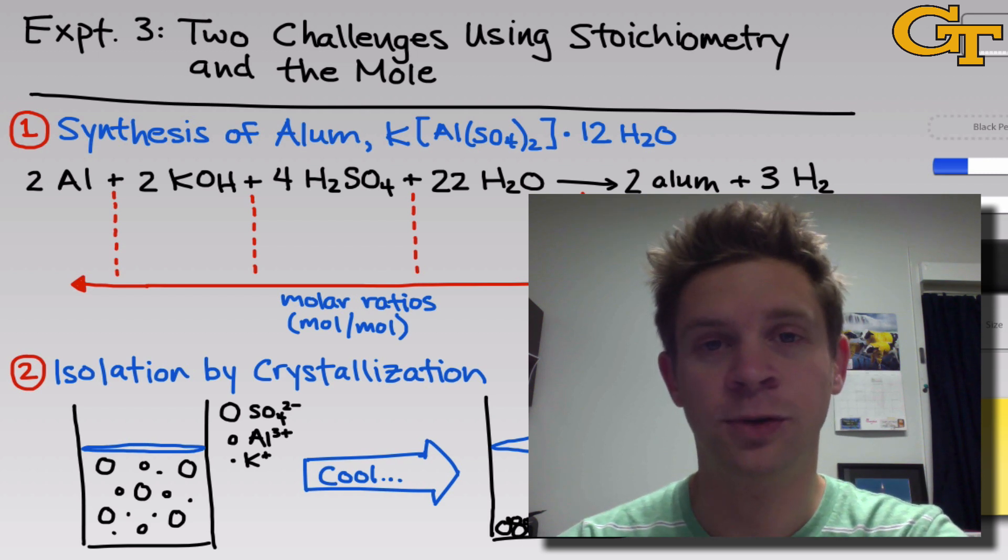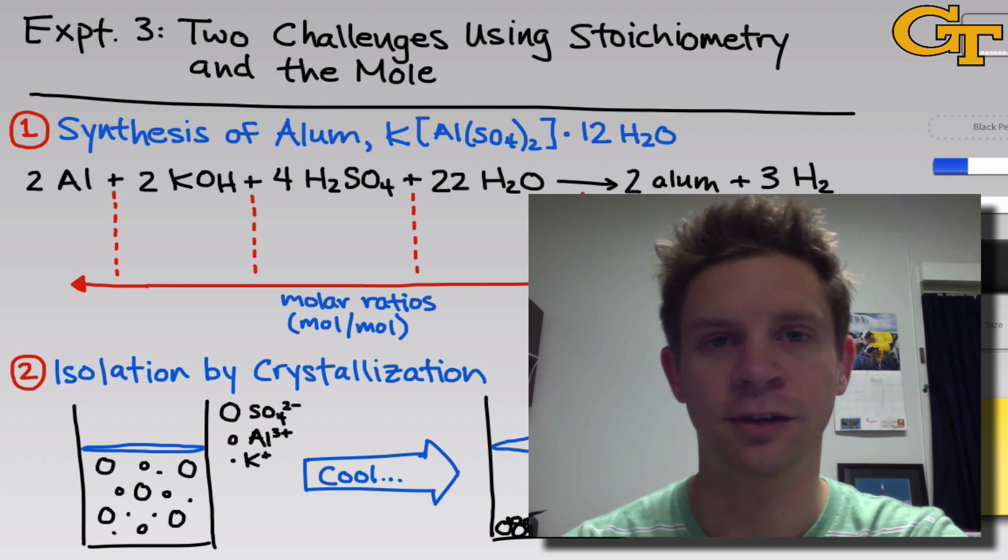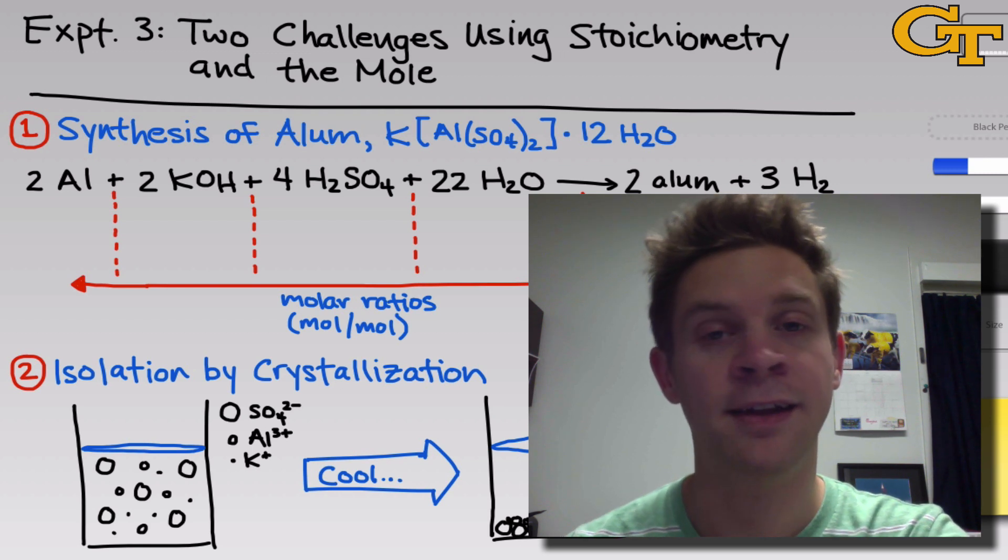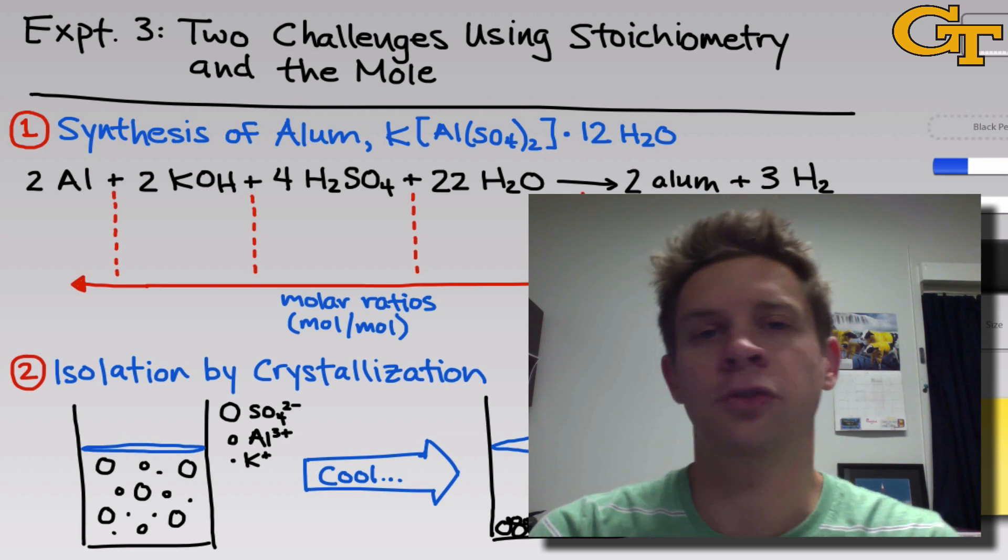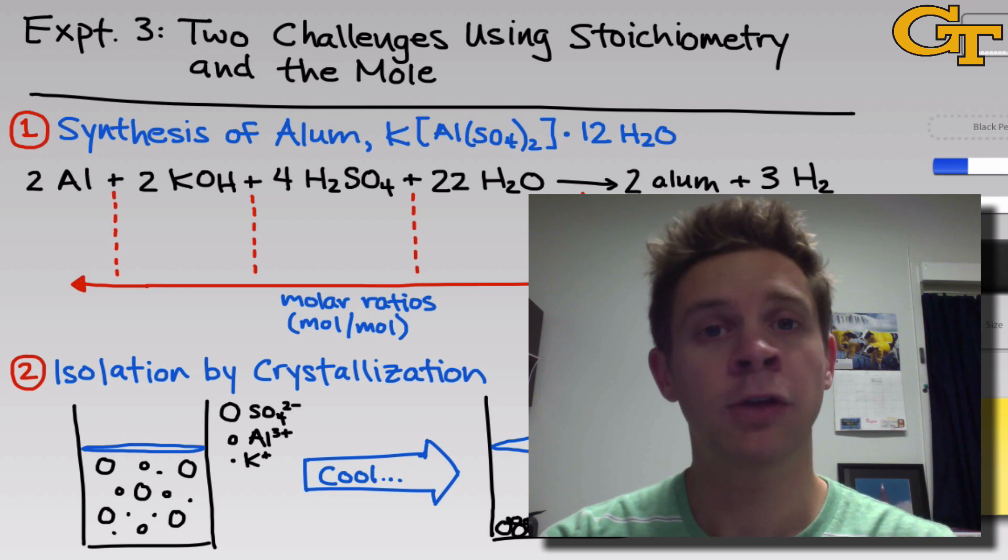In the first part, we're going to perform a synthesis of alum from aluminum cans, and the goal will be to synthesize 10 grams of product. To prepare this reaction and actually get the desired yield of product, we need to plan and use the right molar ratios of reactants. So a big part of the first part of the experiment is performing these stoichiometry calculations properly so that we get the desired yield of product.